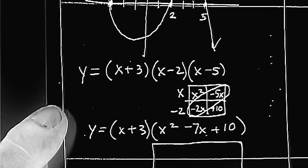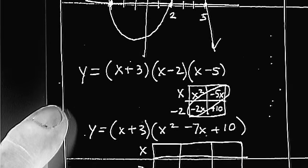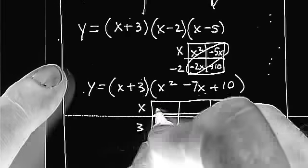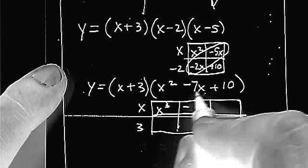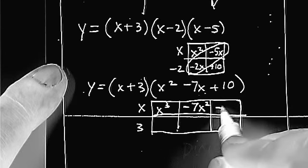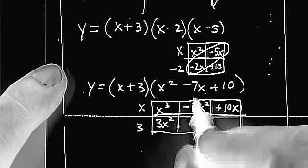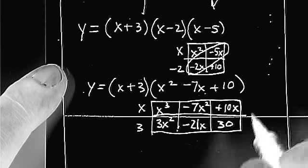So basically, I am going to be doing this again, just a bigger box. So x squared and x, that's x cubed, minus 7x times x is minus 7x squared, plus 10x. 3x squared minus 21x, and lastly, 3 times 10 is 30.